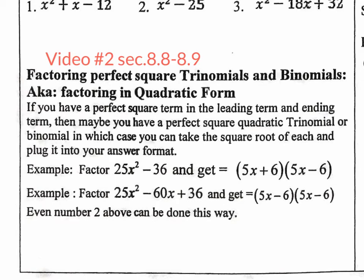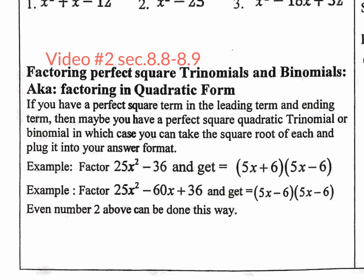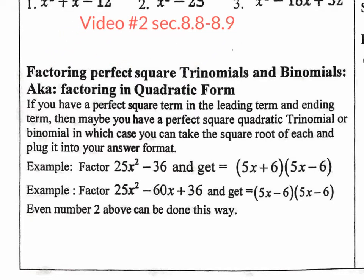Okay guys, so this is video number two, and this is actually section 8.8 and 8.9, the last two sections of chapter 8. These last two sections are really easy. What are we doing? We're factoring perfect square trinomials and binomials. 8.8 is factoring perfect square binomials, 8.9 is factoring perfect square trinomials. But they're both really the same topic.